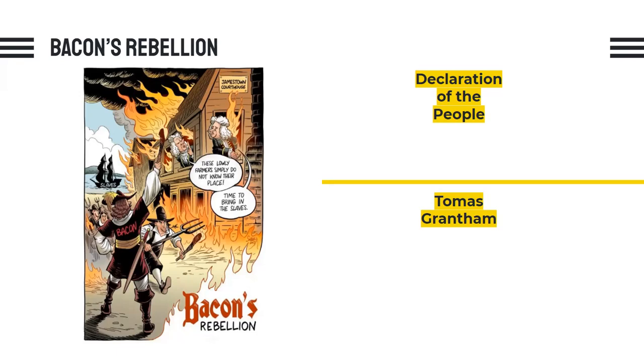But Grantham ended up lying about the pardon, and instead caused 23 rebels to be killed, bringing the rebellion to a very violent and bloody end that wasn't necessary. But the elites wanted to make a statement — they wanted to make an example out of these people to say, 'This is what happens when you fight back,' to dissuade others from wanting to rise up.